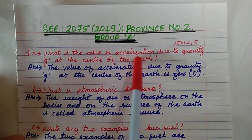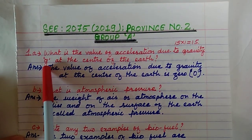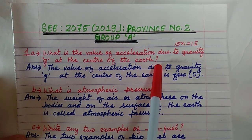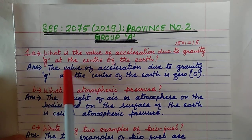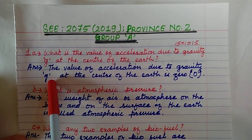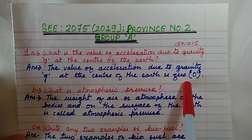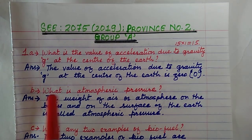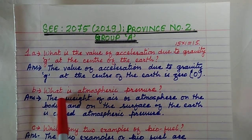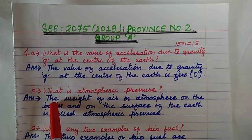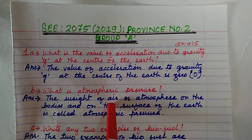Question number 1A: What is the value of acceleration due to gravity G at the center of the earth? The value of acceleration due to gravity G at the center of the earth is zero.